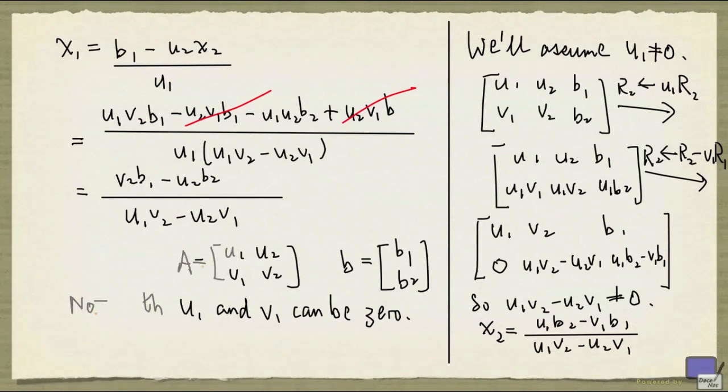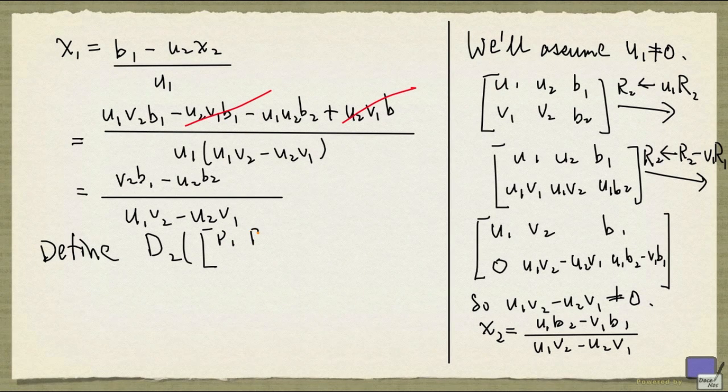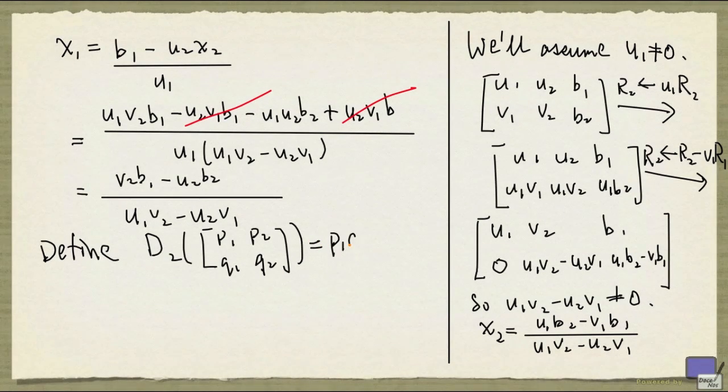Alright. Now I'm going to write x1 and x2 in a special way. And to do that, I'm going to define something called d2 of a matrix. So define d2 of a matrix, say p1 p2, q1 q2, to be the quantity p1 q2 minus p2 q1.